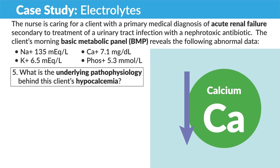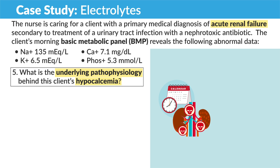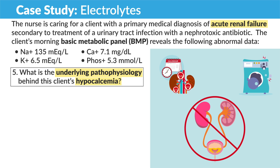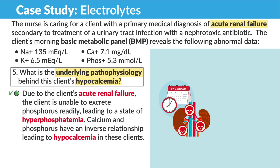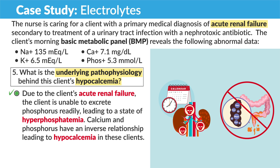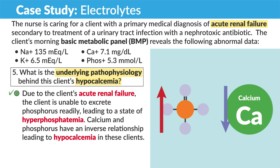This question is asking what is the root cause of this low calcium, that hypocalcemia. Let the question help you — the key term is that the client has acute renal failure, which is basically broken washing machines of the body. The body cannot clean the blood and drain excess phosphorus out and into the urine. Naturally, phosphate will go up, making it high, which in turn makes calcium low. The correct answer: due to the client's acute renal failure, the client is unable to excrete phosphorus readily, leading to hyperphosphatemia. Calcium and phosphorus have an inverse relationship, leading to hypocalcemia in these clients. Knowing the pathophysiology first will ultimately help you understand what's going on in the body and find the correct answers.